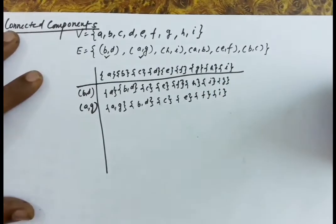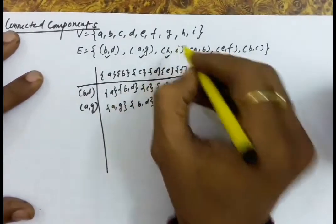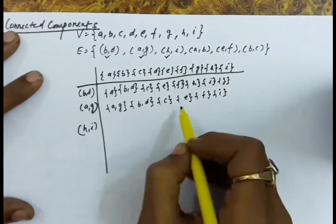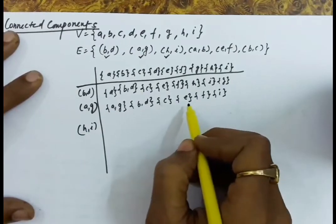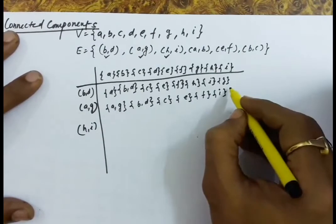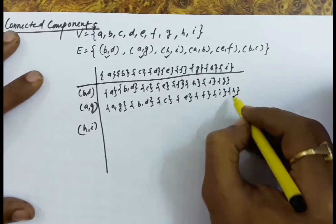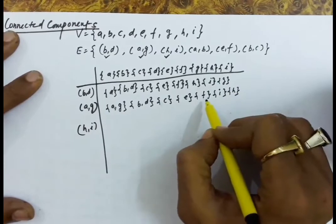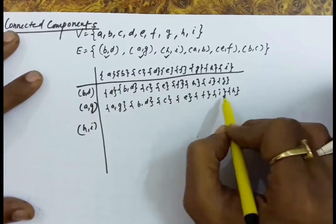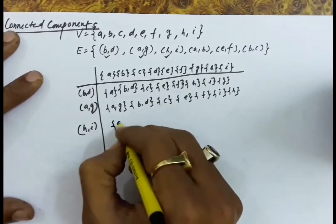Next we take edge H-I. H is in a different set and I is in a different set, so we will unite these two sets.